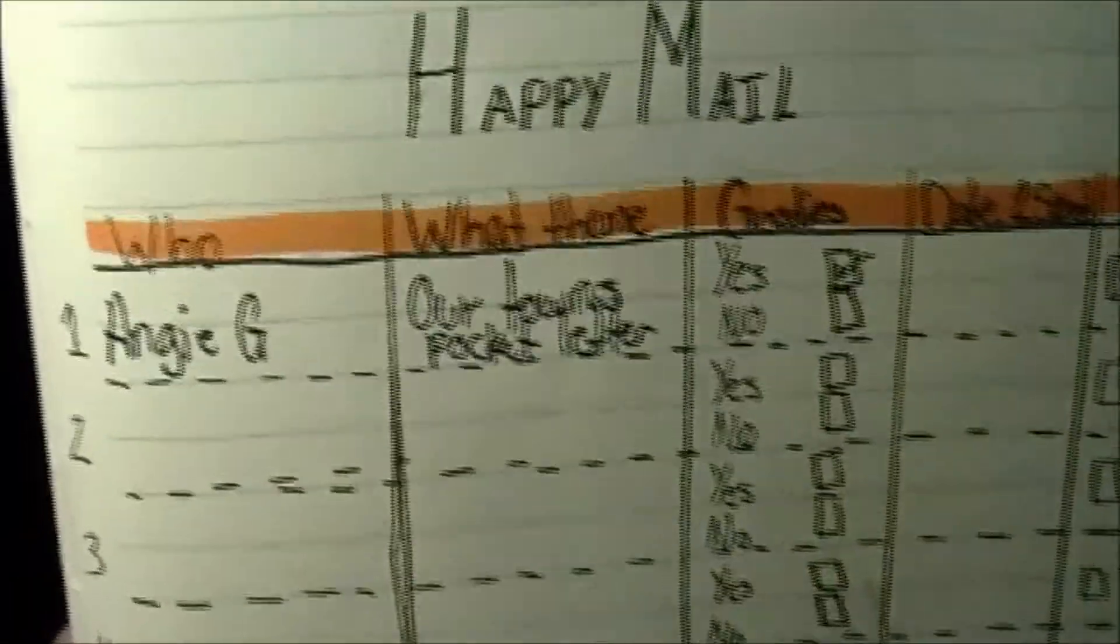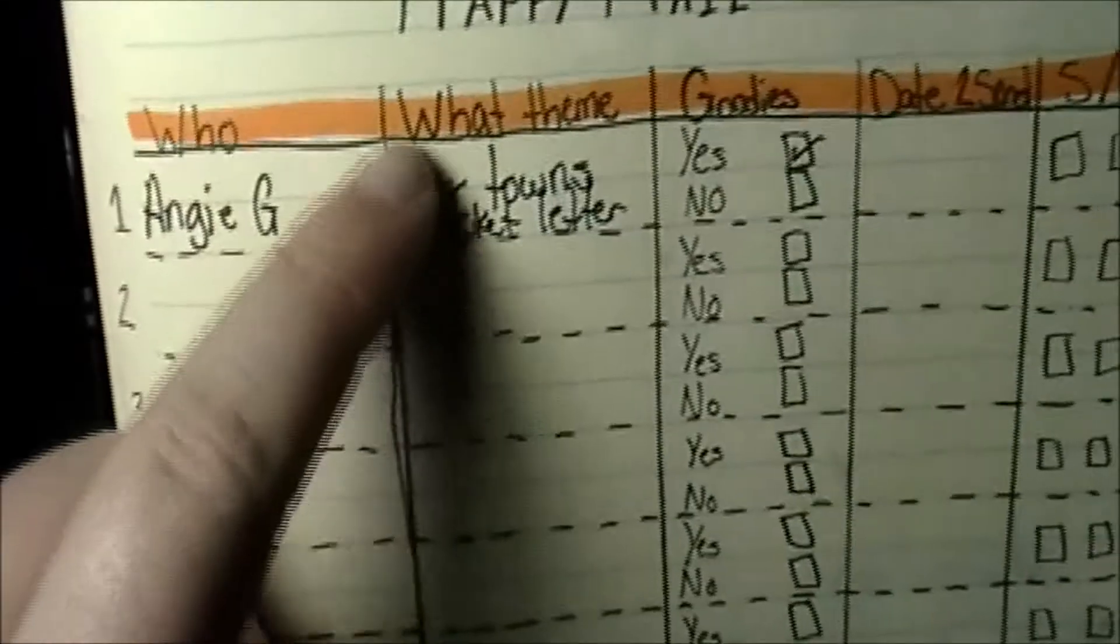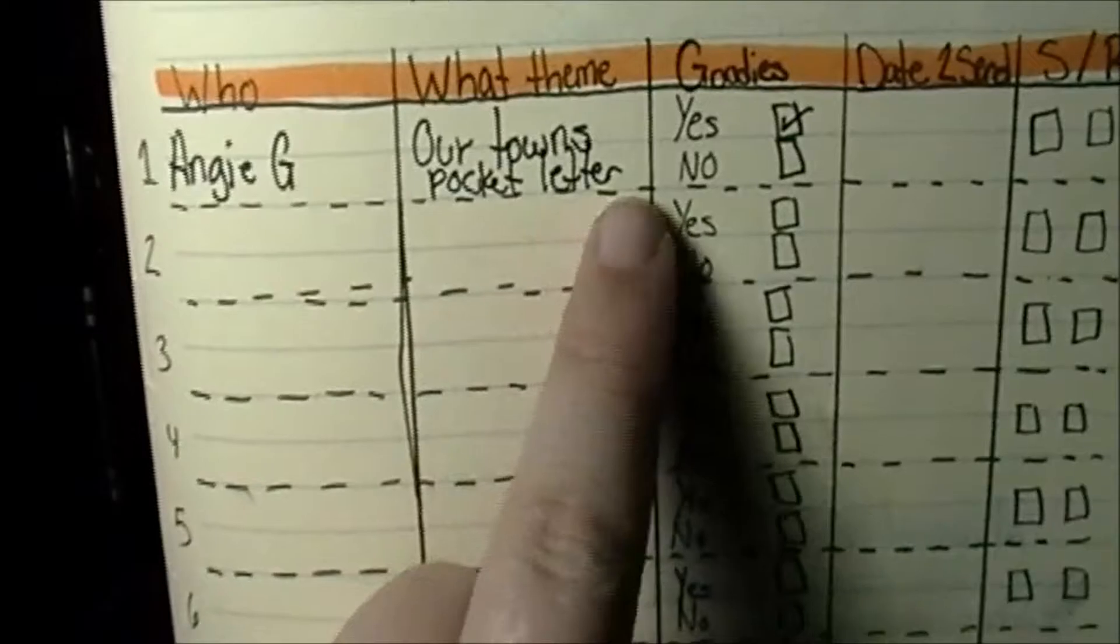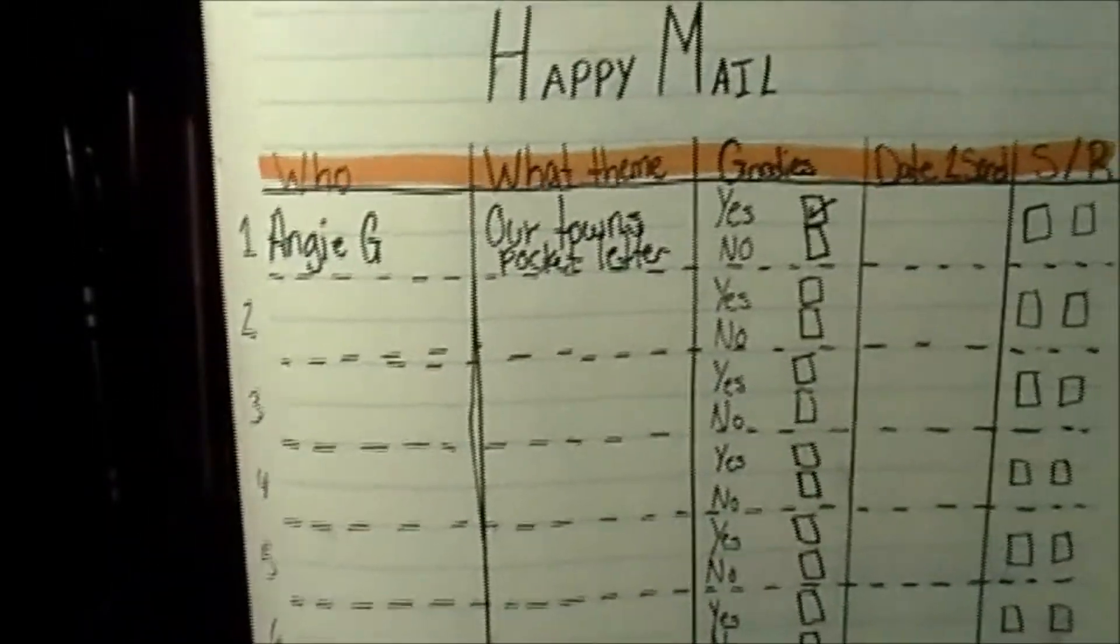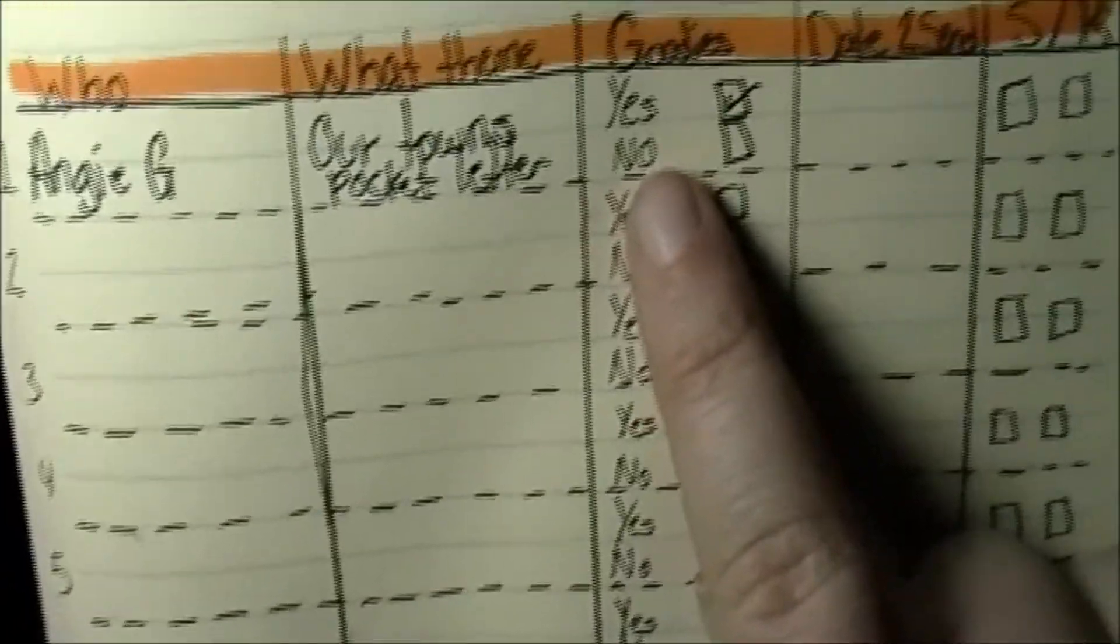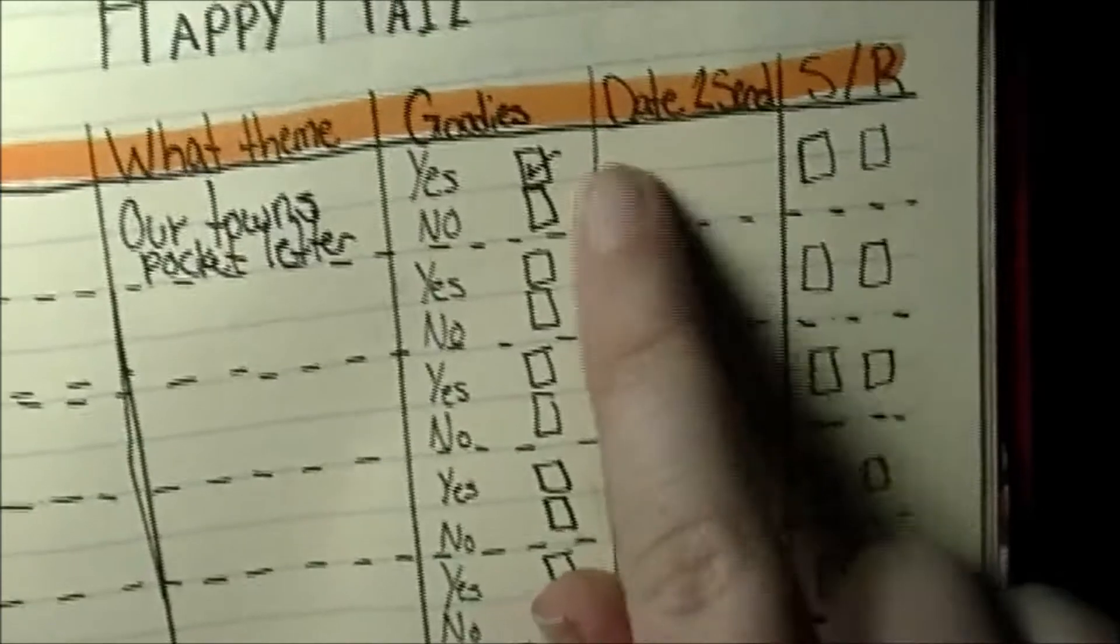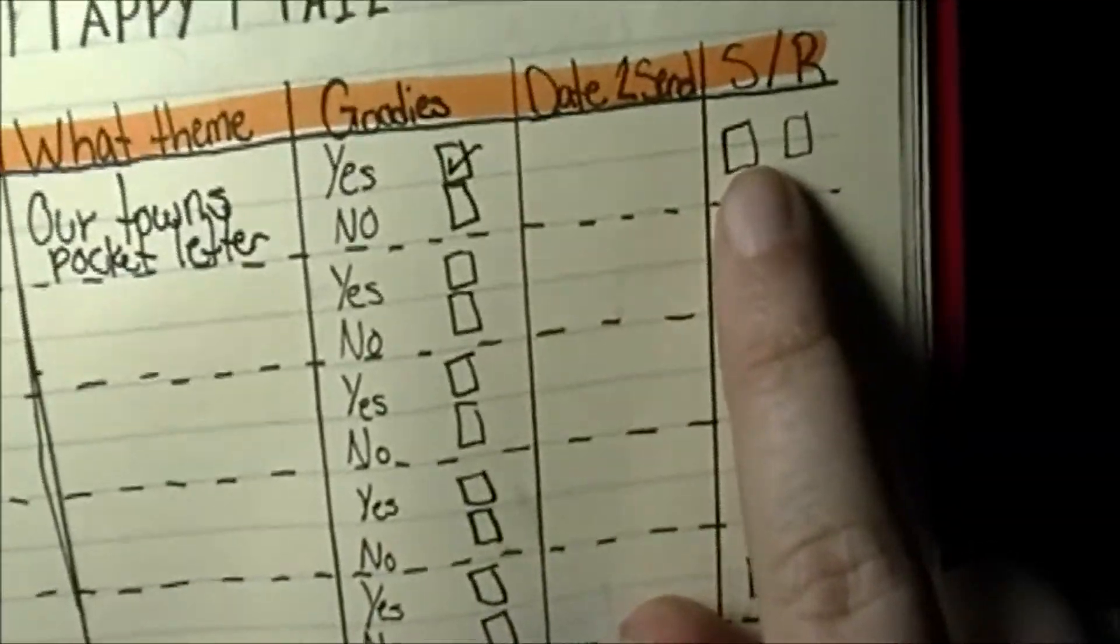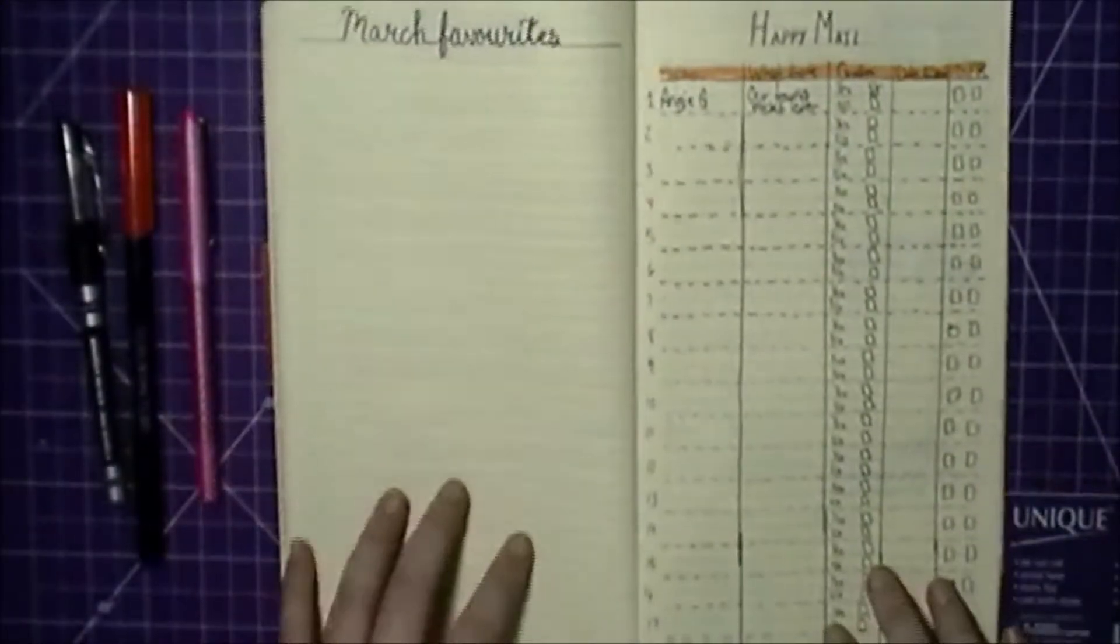Then I decided to do a Happy Mail tracker because I'm involved in a lot of swaps. As you can see, I have one coming up that I have to do, but I have who, what theme, and then I also write down what kind of a swap. Like if it's a stamped image swap, a die cut pocket letter. Then do I include goodies, the date to send by, and then sent and received. I'll check those off once that happens.